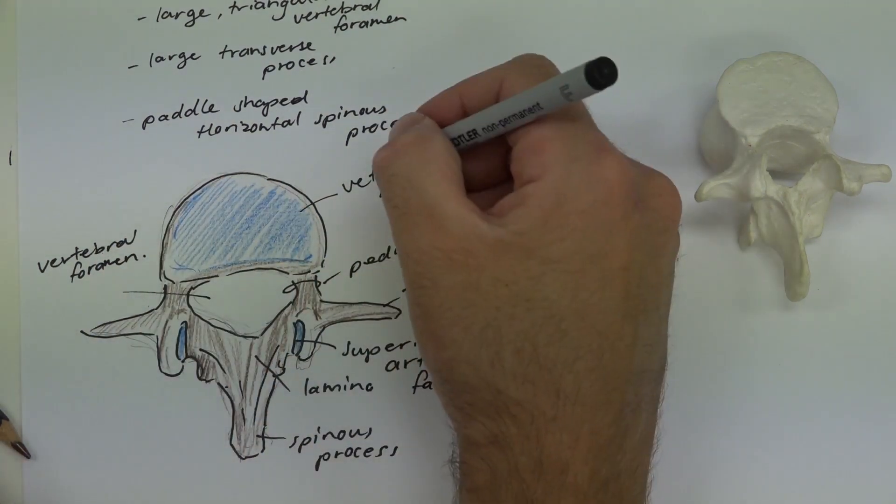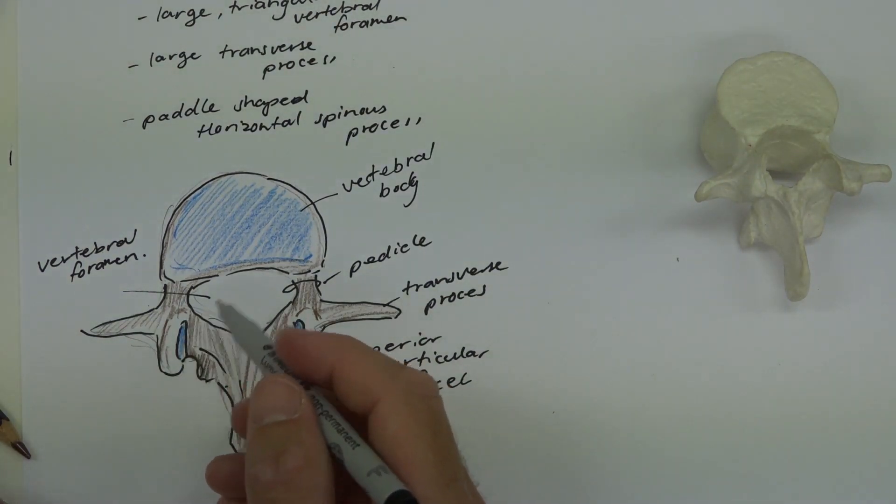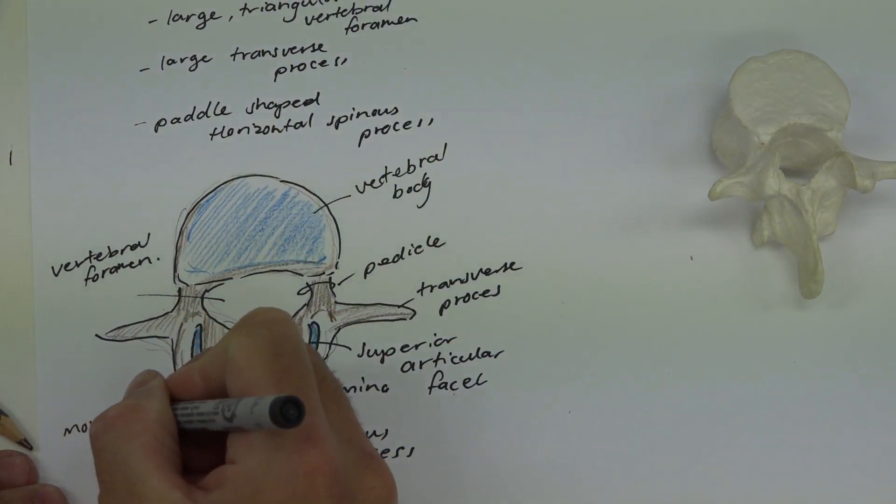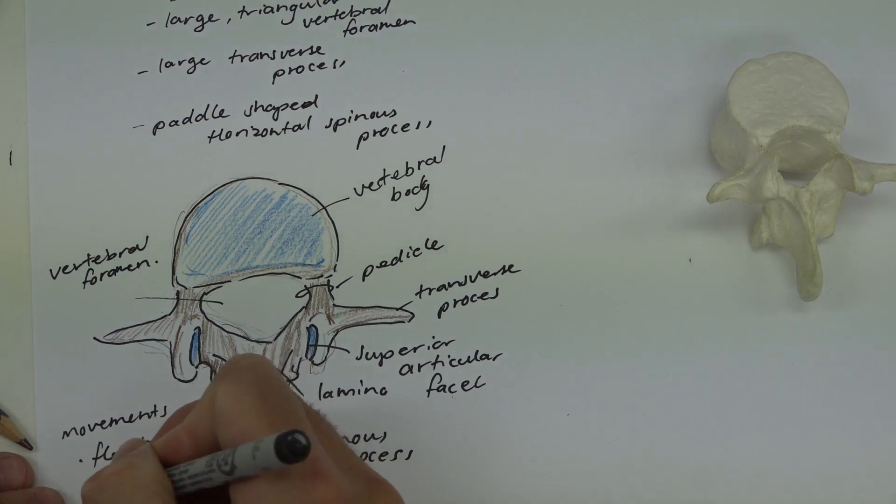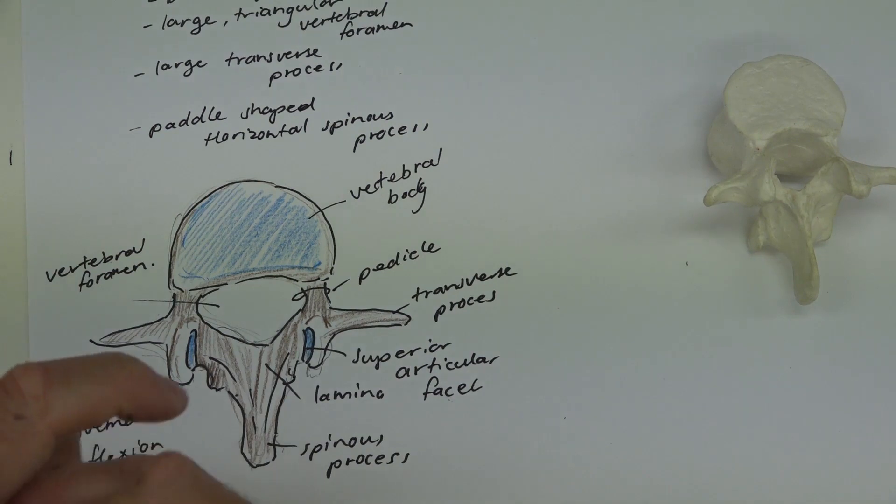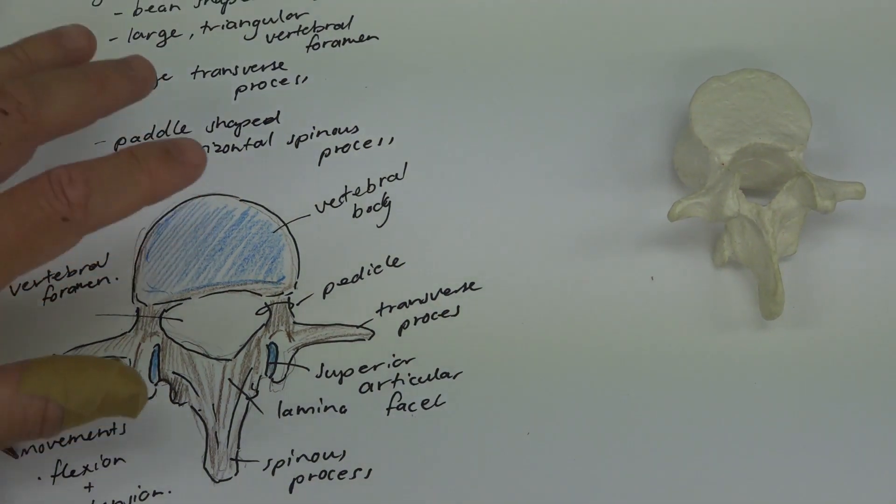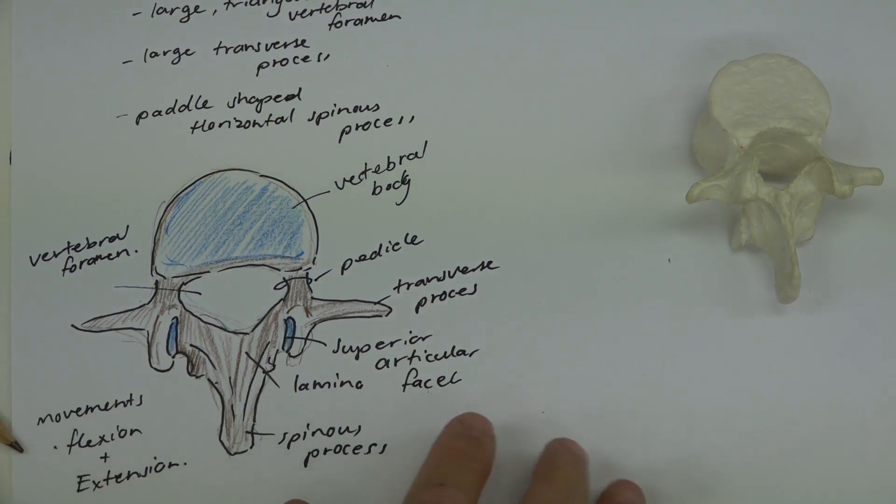So your lumbar vertebrae, because their articular facets are orientated in the sagittal plane, the movements that we then have here are going to be flexion and extension only. We can have a small amount of rotation occur between these vertebrae, but it's only about 12 degrees total. So in this region, if you then go to the video which talks about the spinal muscles, we'll learn about how these muscles create action around these vertebrae.